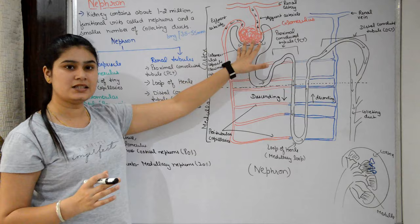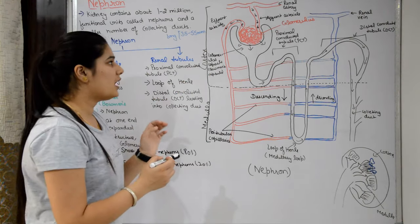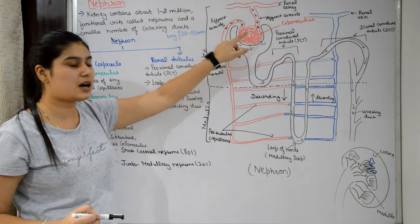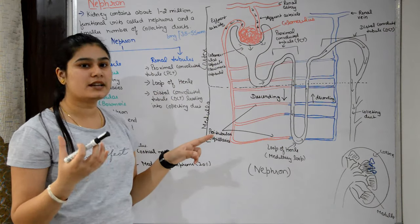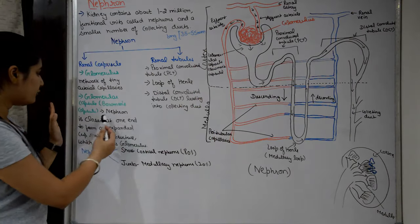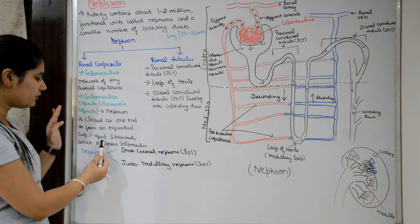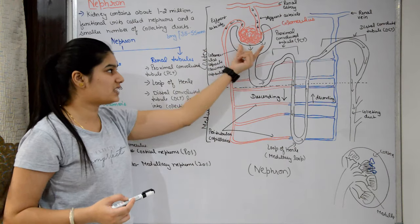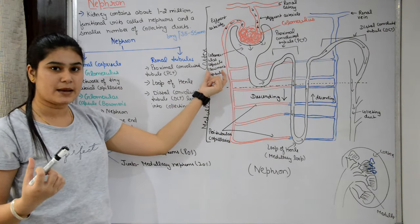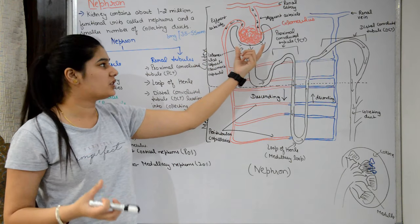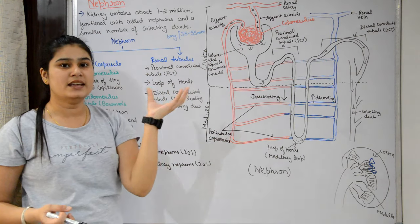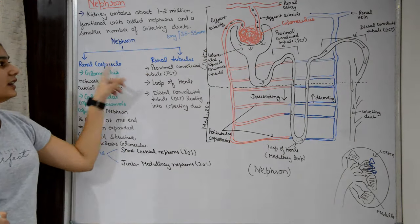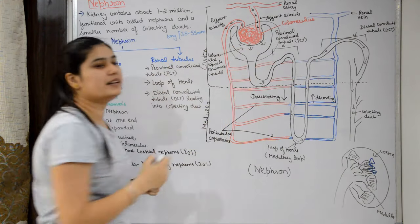The nephron is closed at one end, forming an expanded cup-shaped structure called the Bowman's capsule or glomerular capsule. This cup-shaped structure encloses the glomerulus. Together, the glomerulus and the glomerular capsule are called the renal corpuscle.